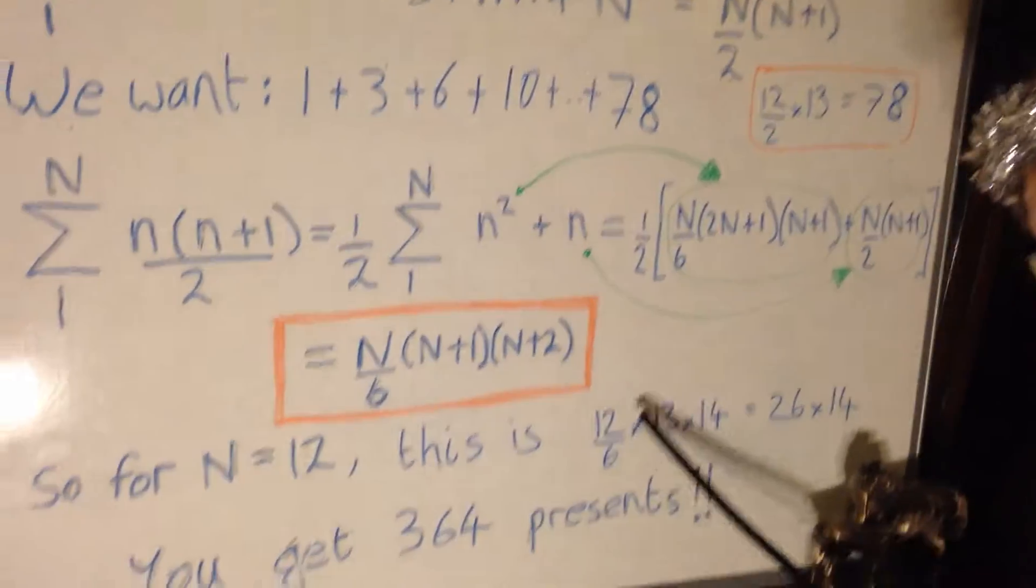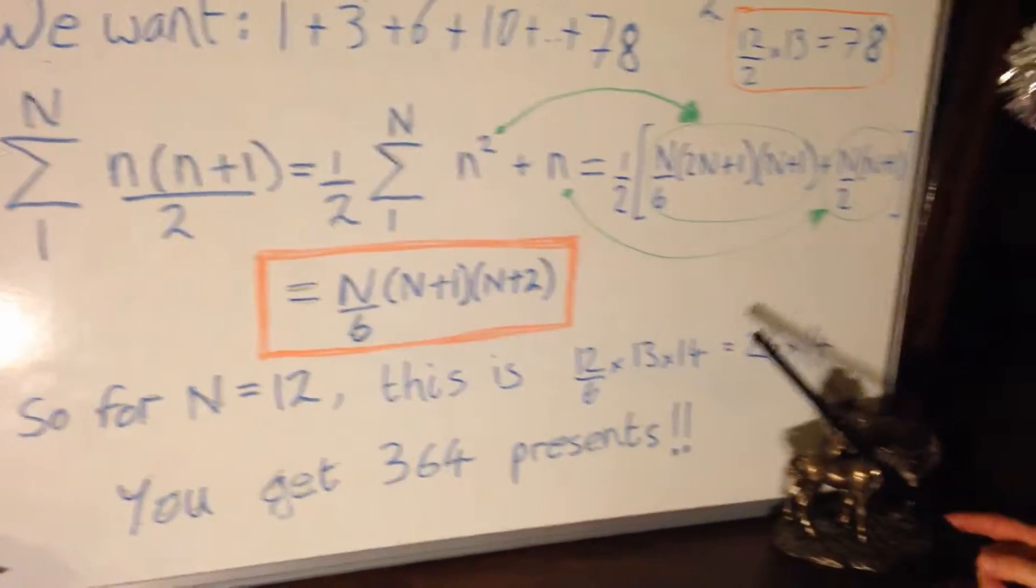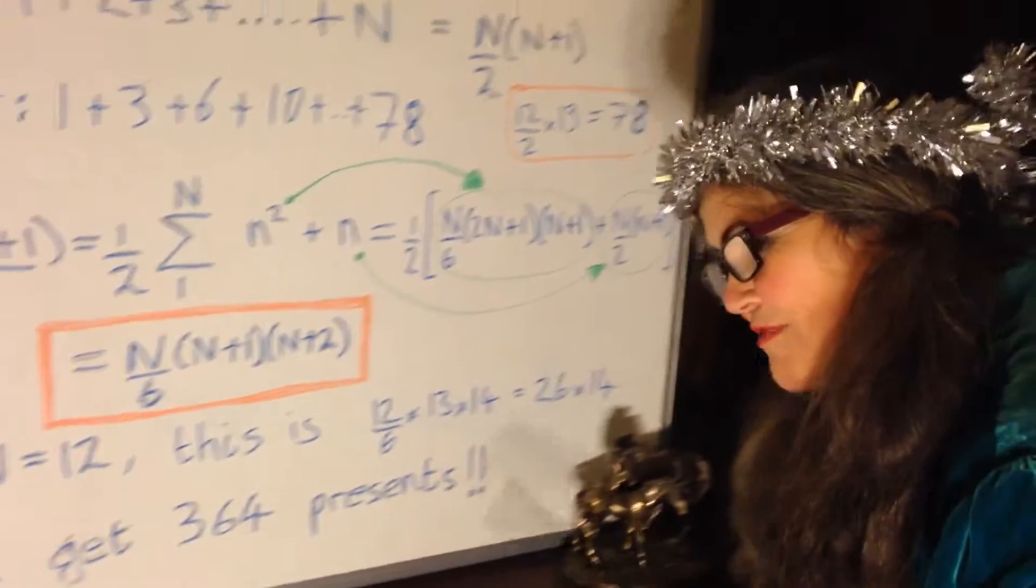So, for n equals twelve, this is twelve over six times thirteen times fourteen, you get three hundred and sixty-four presents.